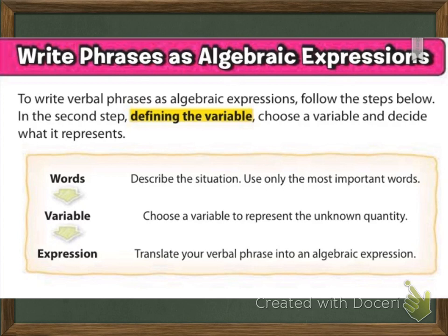It says write phrases as algebraic expressions. To write verbal phrases as algebraic expressions, follow the steps below. In the second step, defining the variable, choose the variable and decide what it represents. So that's important. You have to be able to identify what your variable is representing. You can't just change everything to a letter and say, oh, Alabama's A, and California's C, and Georgia's G, and then I've got a bunch of variables. No, you only need variables for the things that you're actually trying to solve for. The things that you don't know and that you need to solve for.